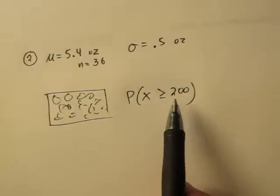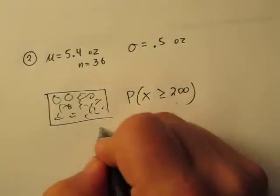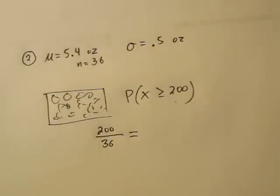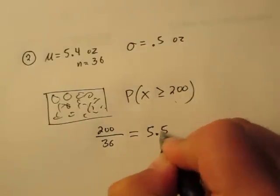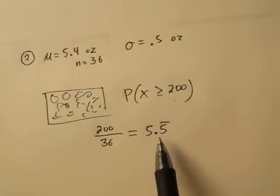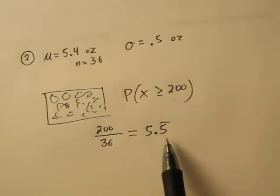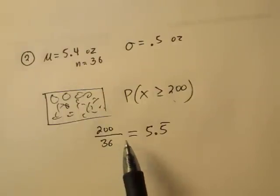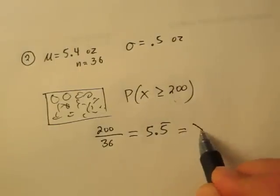So a quick remedy is just divide 200 by 36 and you get 5.5 repeating. If the mean weight of apples in this box is at least 5.5 repeating, then the overall weight of the 36 apples in the crate or the box is going to be at least 200. So let's use this number here as our x.